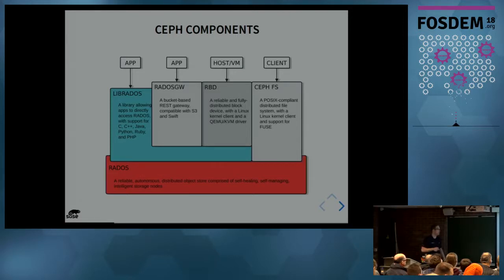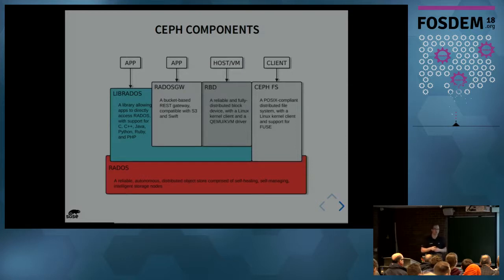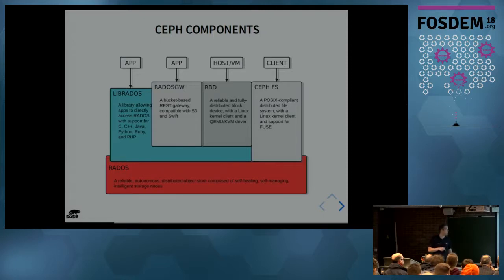Then there is the RADOS Gateway — a REST gateway compatible with S3 and Swift, often used with OpenStack. Then we have RBD, the RADOS Block Device, mainly used for virtual machines to directly add physical storage to the VM. And last but not least, CephFS — the file system from Ceph on top. Those are the different ways to get data out of your distributed Ceph storage.